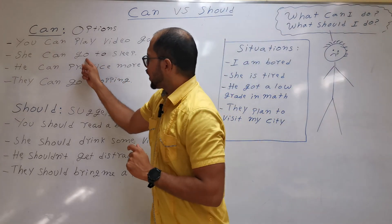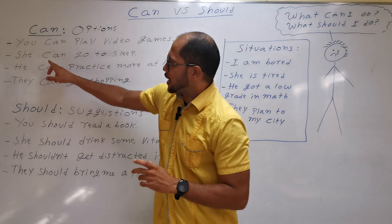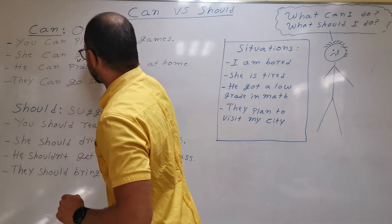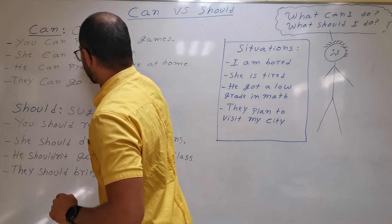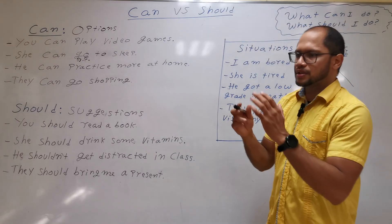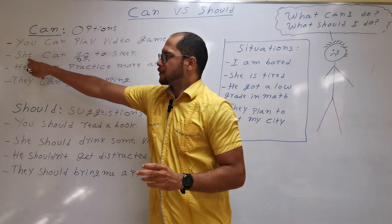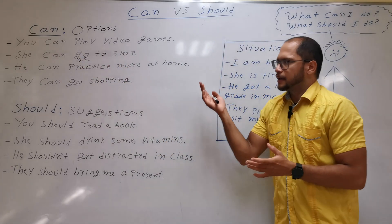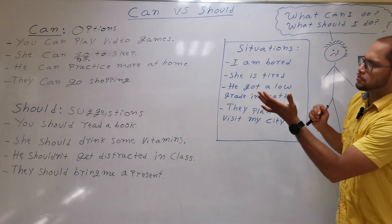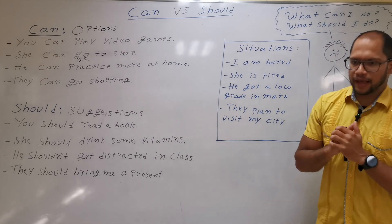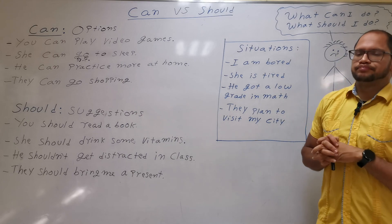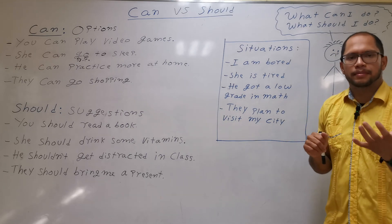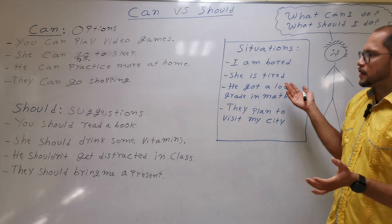As you can see, when you use CAN you don't conjugate the following verb. After CAN, you use the verb in the base form — it doesn't matter if you have she, he, they, you, I. It always stays in the base form after CAN or SHOULD. So: she can go to sleep, she can watch a movie, she can drink some tea, she can drink some coffee — those are all options.